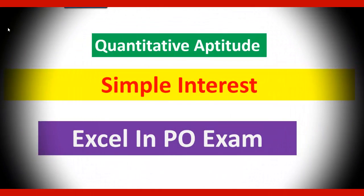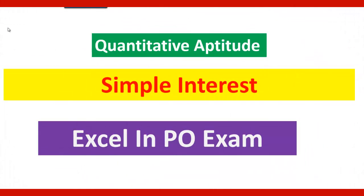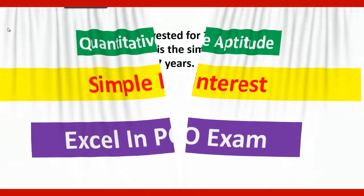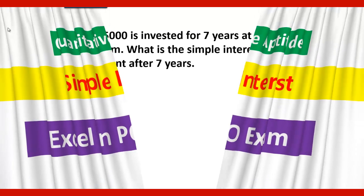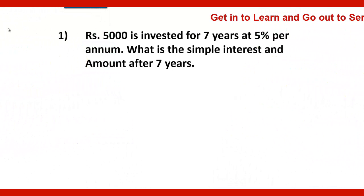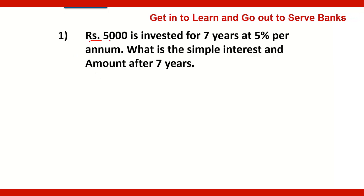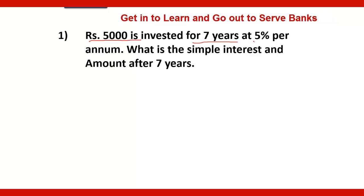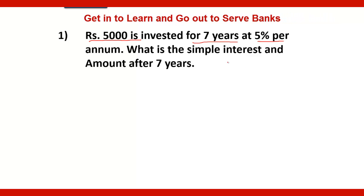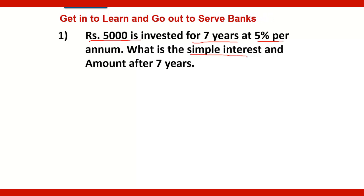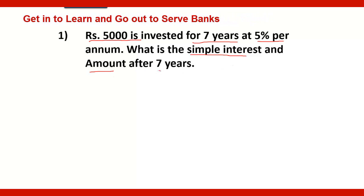Friends, welcome to Abhivakti India's Future Classroom. In today's episode of Quantitative Aptitude, we will see some tips and tricks to solve problems on simple interest. Welcome to Excel in PO Exam. Here is the first question on the screen: Rs.5000 is invested for 7 years at 5% per annum. What is the simple interest and the amount after 7 years?